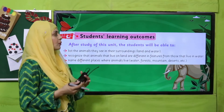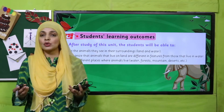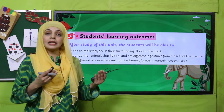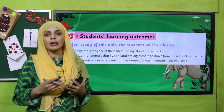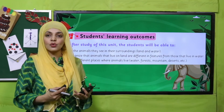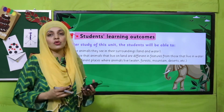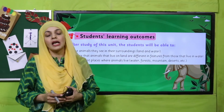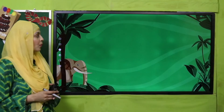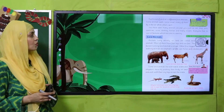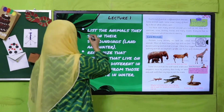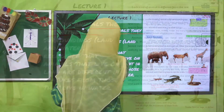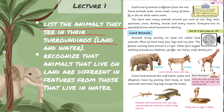So my dear students, let's get started. Here are the student learning outcomes that we will cover in this unit. These are for the parents and the teachers to understand that by the end of this unit all the students will be able to understand these points. In Lecture Number One, all the students will be able to list the animals they see in their surroundings, like land and water.